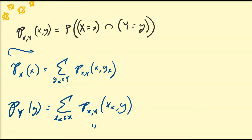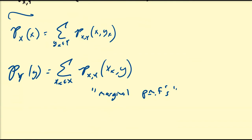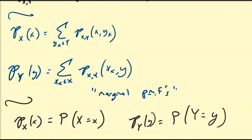So again, these are what we call marginal probability mass functions. The marginal PMF of x at value x is the same thing as the simple probability that x equals x, and the marginal PMF of y evaluated at y is the same thing as the simple probability that y equals y. So they represent the same thing.